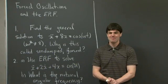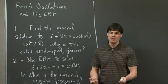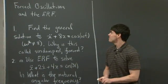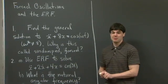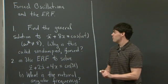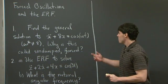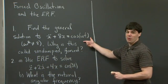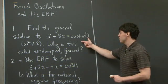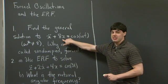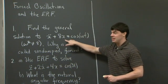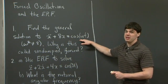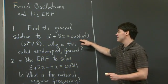Hi everyone, welcome back. Today we're going to take a look at some forced oscillators and the exponential response formula. The problem we're going to look at is, for part one, to consider the equation x'' + 8x = cos(ωt), with a forcing term on the right-hand side.